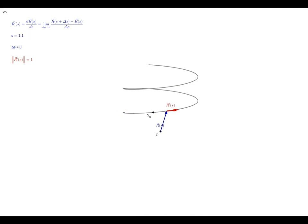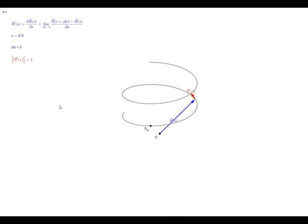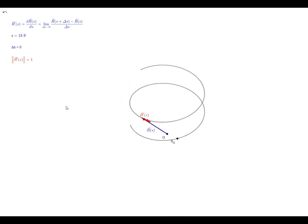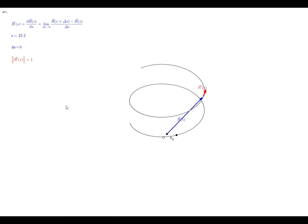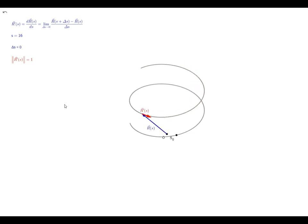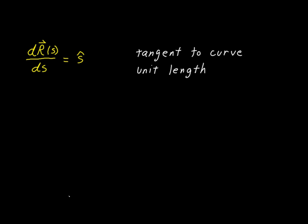We can say that the derivative of a vector with respect to the arc length is a unit vector that is tangent to the curve at all places. The derivative is always tangent to the curve and always unit length — and that's what it means to take the derivative of a position vector with respect to the arc length.